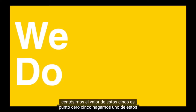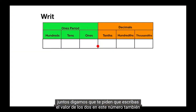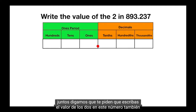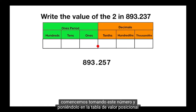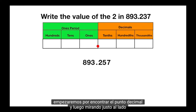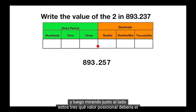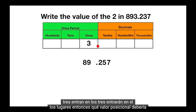Let's do one of these together. Let's say you're asked to write the value of the 2 in this number. Well let's start by taking this number and putting it on the place value chart. We'll start by finding the decimal point and then looking right next to it at this 3. The 3 will go into the ones place.